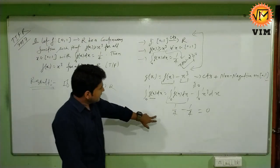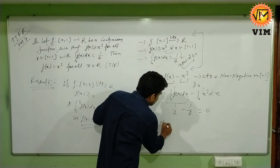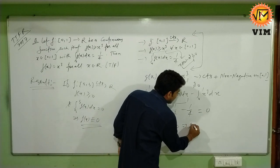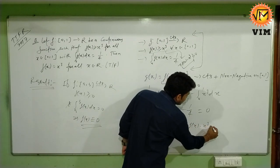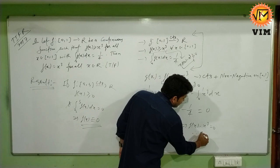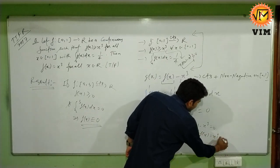If we use this result here, g(x) is identically 0, that implies f(x) - x³ equals 0. Therefore, f(x) equals x³.